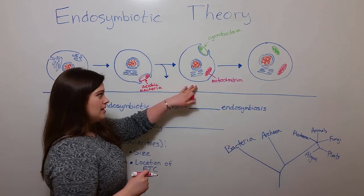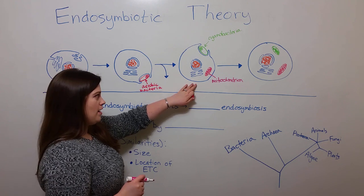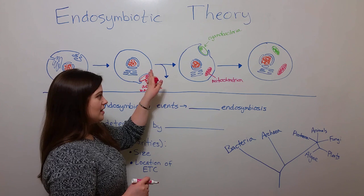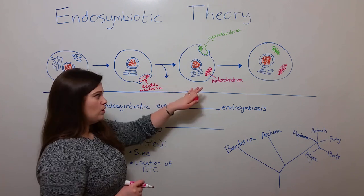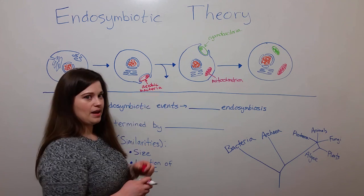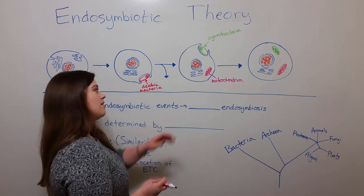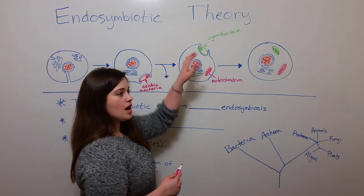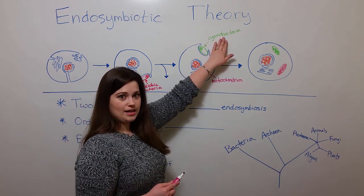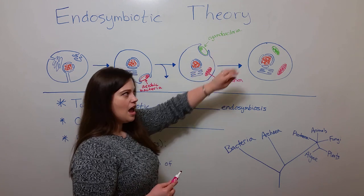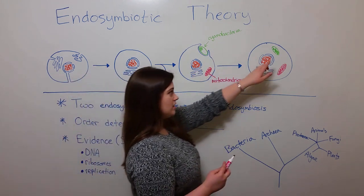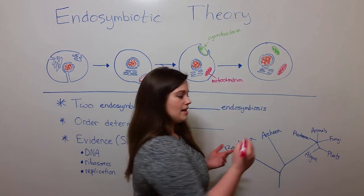After this had happened — and remember that there are many, many generations, perhaps even millions of years, that go by as the mitochondria are developing from this aerobic bacteria lineage — then one of these cells engulfs another bacteria cell: a photosynthetic cyanobacterium. And over many, many generations again, this leads to the organelle that we know of as the chloroplast.